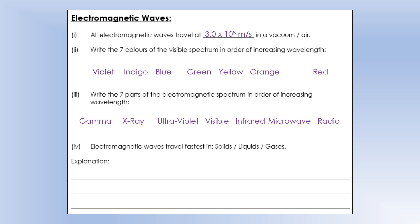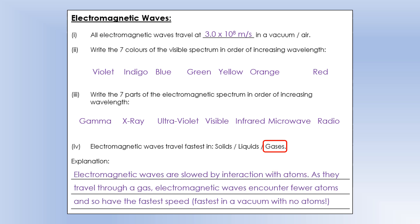So electromagnetic waves travel fastest in gases, so it's basically the opposite of a mechanical wave. And the reason being, electromagnetic waves are slowed by interaction with atoms. So an electromagnetic wave doesn't require particles to travel, which is why it can go across space. In fact, if it encounters atoms, then they are actually slowed down. So if you travel through a gas, they encounter fewer atoms along the way, and so they have the fastest speed. The fastest would actually be in a vacuum where there are no atoms. And then, therefore, on the opposite logic, in a solid, they encounter the most atoms, so they travel the slowest.